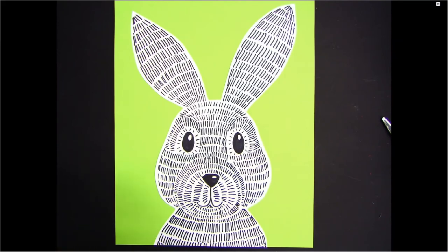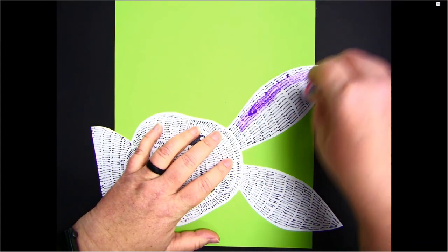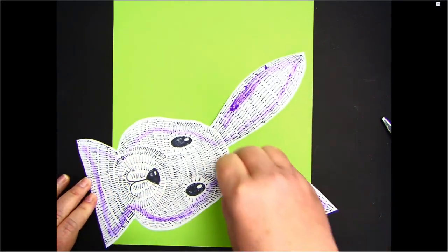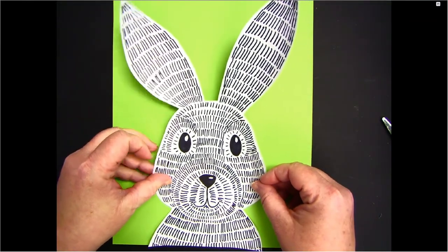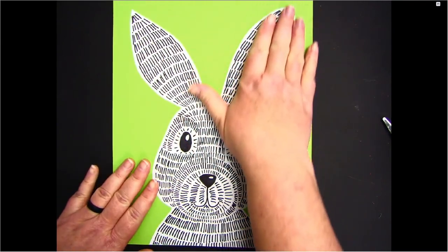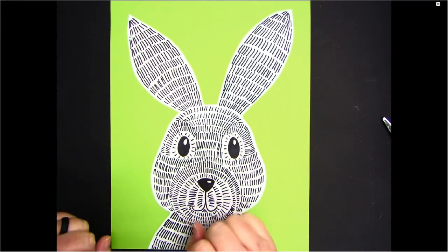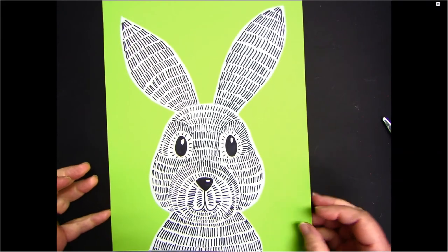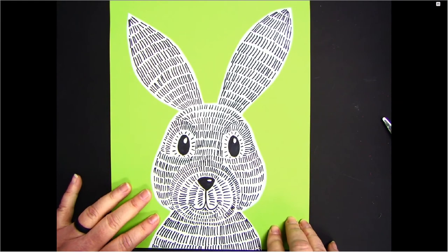I'm going to take my glue stick and make sure you get all his little edges. Another cool option for the background would be to use some scrapbooking paper with a cool pattern to have some more contrast against our bunny. But he really stands out very nicely on this bright green construction paper.